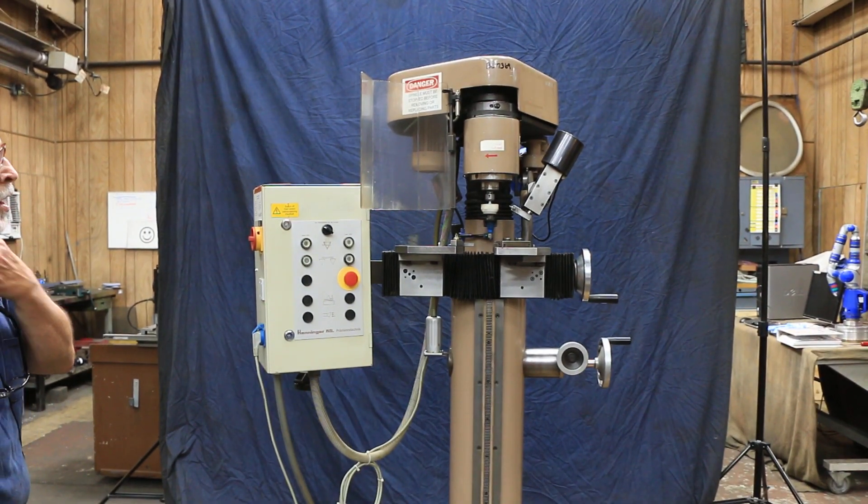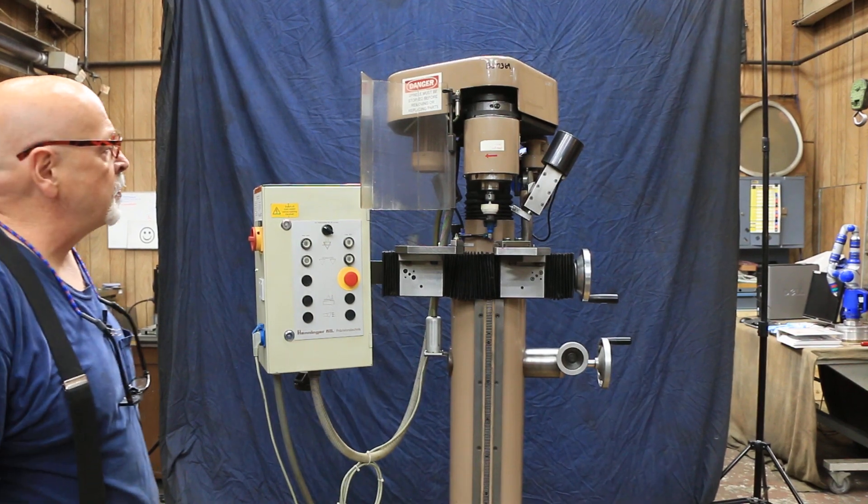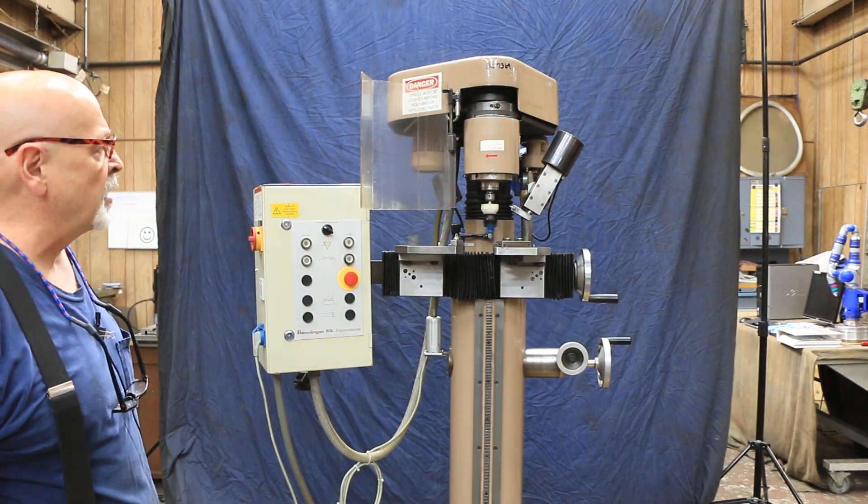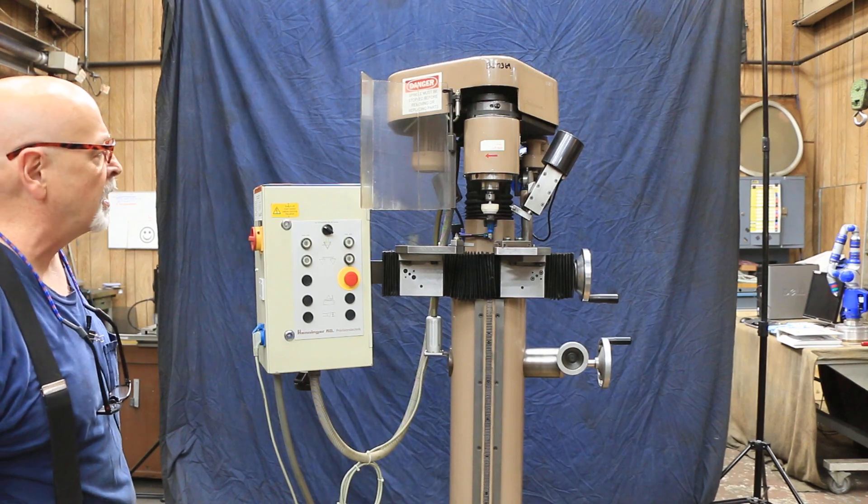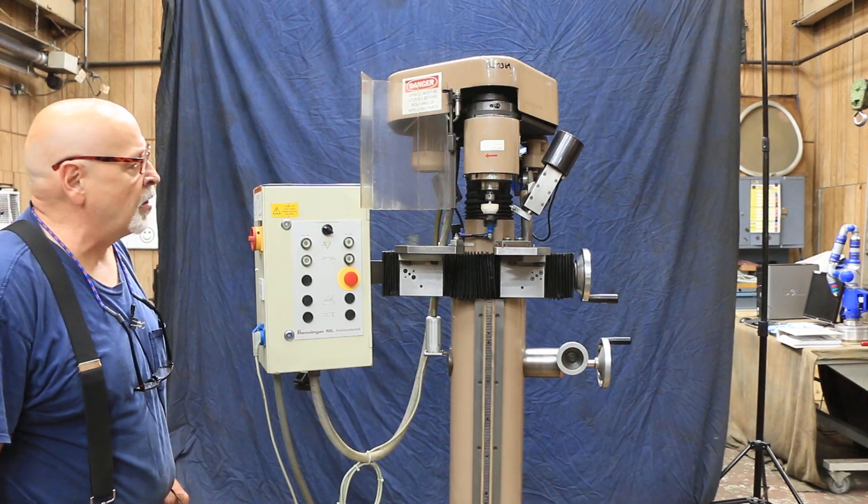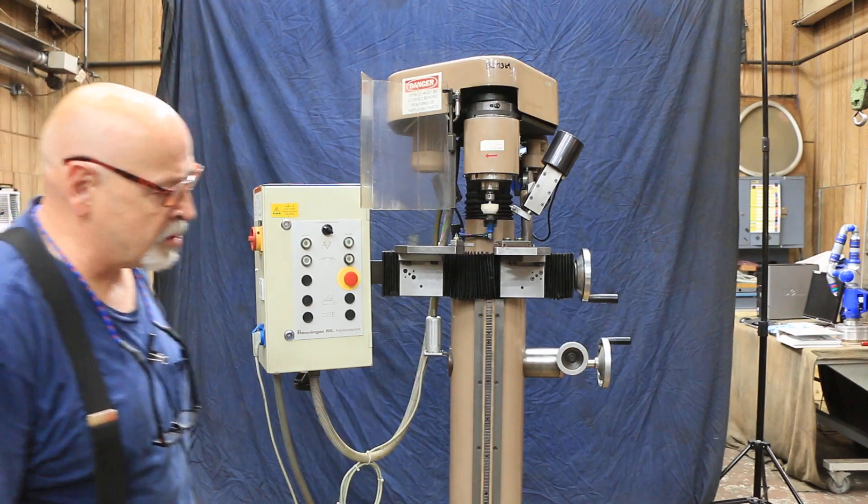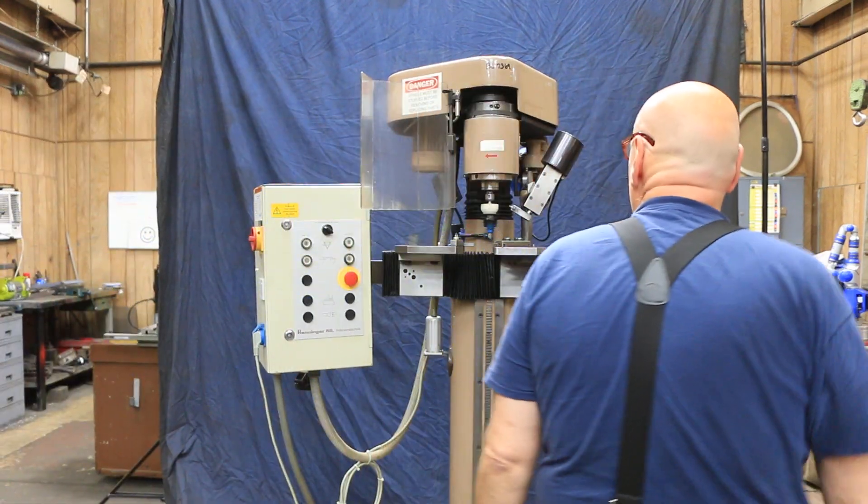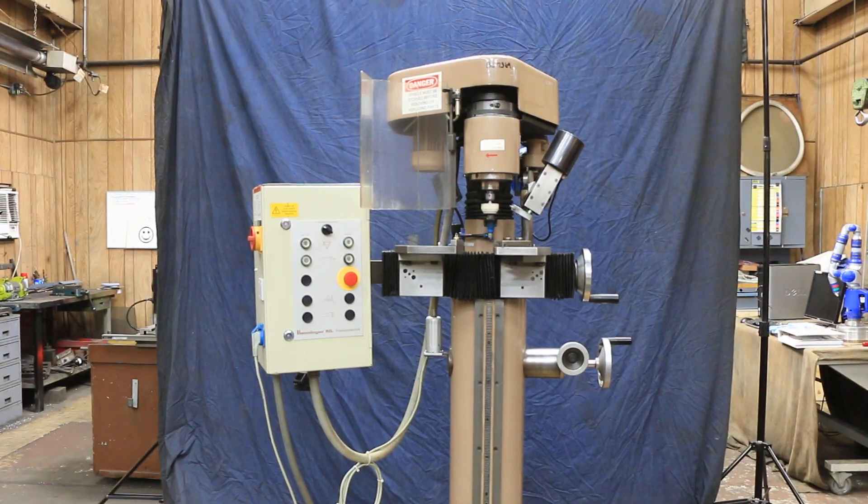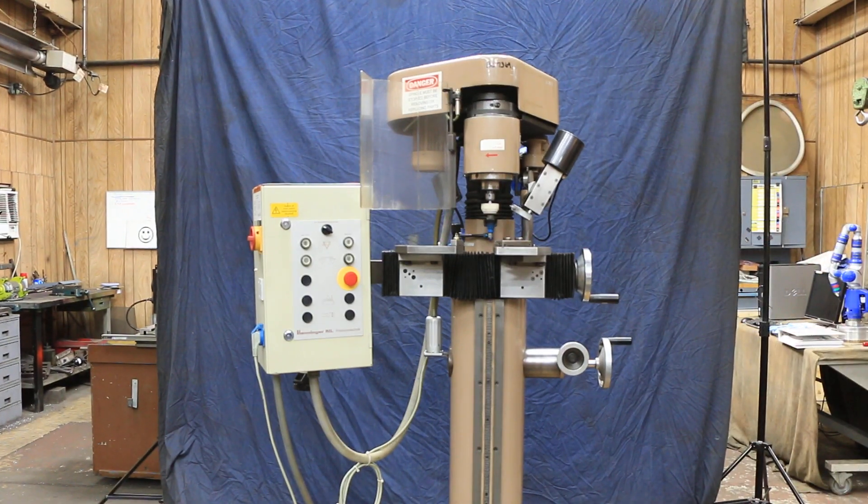So you can grind very high accuracy parts. The difference between a center lap, you're basically just going in and cleaning up a center hole that was already drilled there. In this case, you're either creating the center yourself or you're taking one that's been pre-drilled and making it much more accurate.